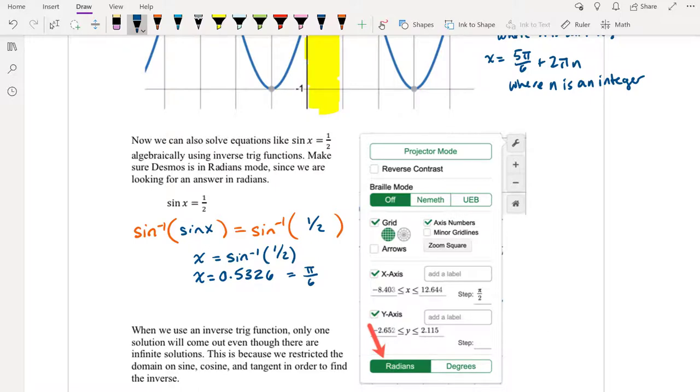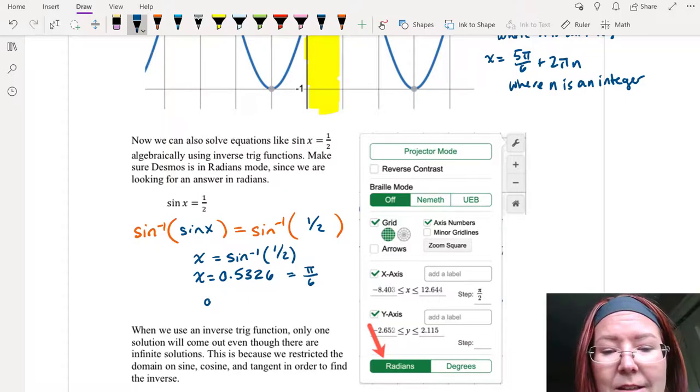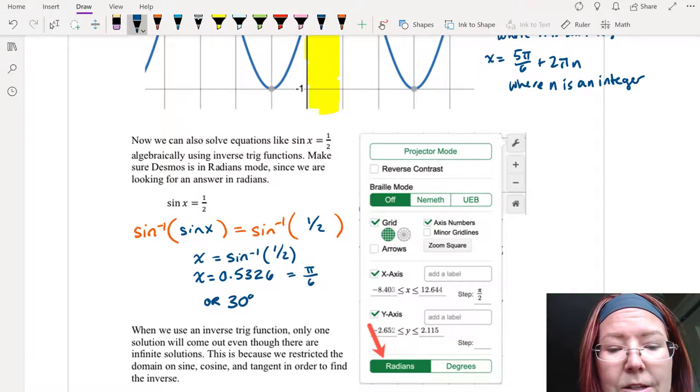Now if I wanted the answer in degrees, I could go over and change from radians to degrees and just watch on the screen. It will instantly change to 30 instead of that decimal value we had. So we could also say that this is 30 degrees.